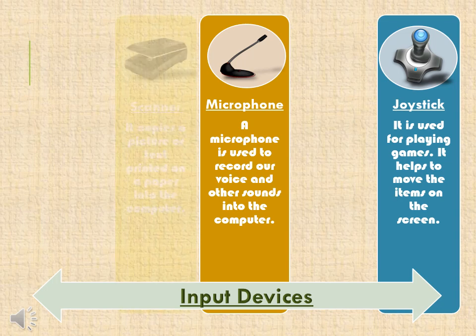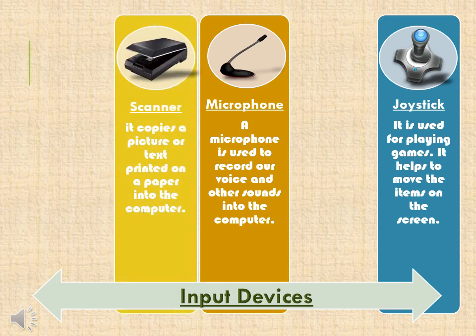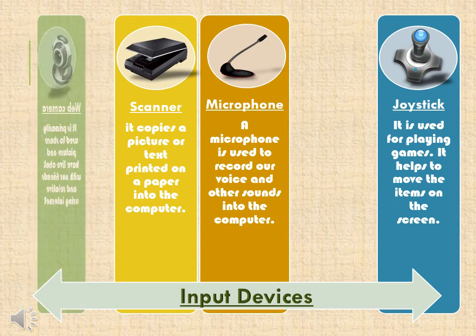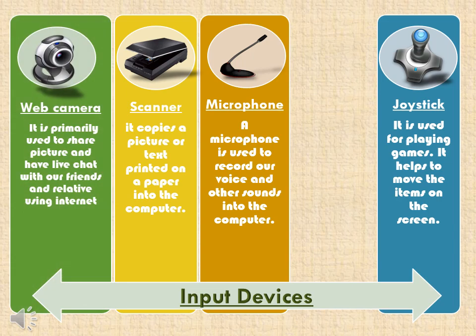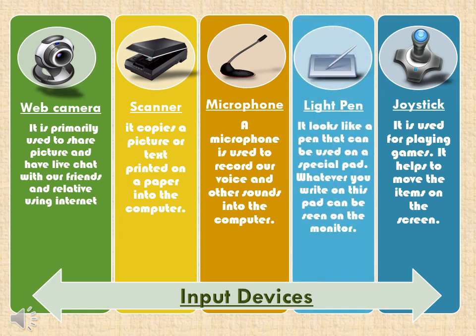Number 3, Scanner — a scanner copies a picture or text printed on a paper onto the computer. Number 4, Web Camera — it is used to share pictures and have live chat with friends and relatives using the internet. Light Pen — it looks like a pen that can be used on a special pad. Whatever you write on it can be seen on the monitor.